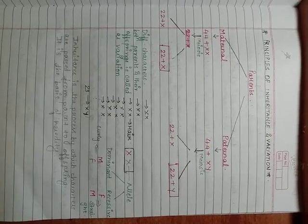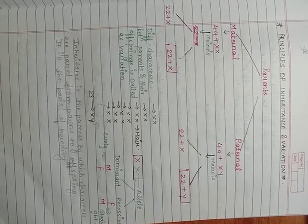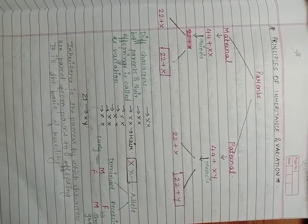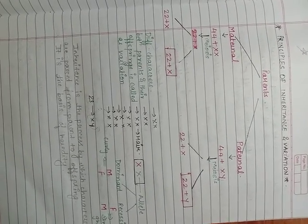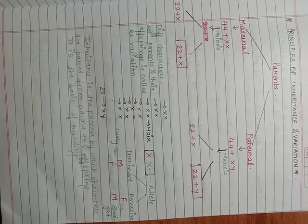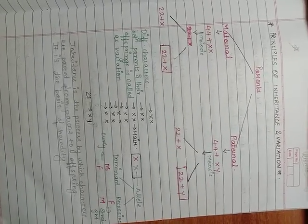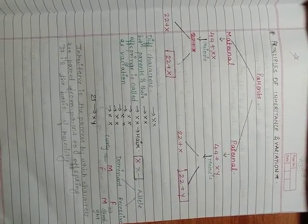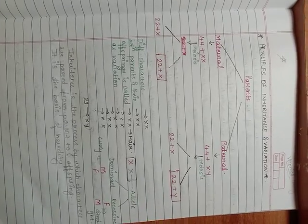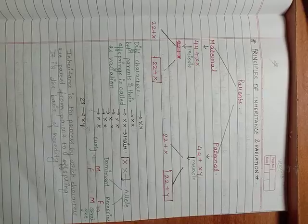Hello everyone, today I will be doing a revision of the chapter principles of inheritance and variation. Let us first understand what is meant by inheritance. Inheritance is the process by which characters are passed from parents to the offspring. It is the basis of heredity, whereas variation means different characters between the parents and your offspring.